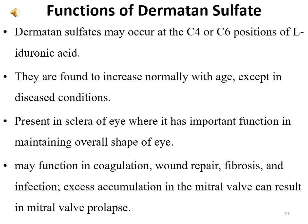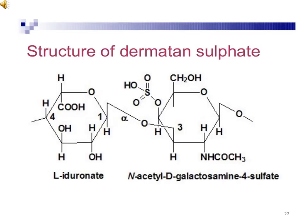Dermatan sulfate is present in the sclera of the eye, where it has an important function in maintaining the overall shape of the eye. It may function in coagulation, wound repair, fibrosis, and infection. Excess accumulation in the mitral valve can result in mitral valve prolapse. L-iduronate combines with N-acetyl-D-galactosamine 4-sulfate to produce dermatan sulfate, as seen in the structure.